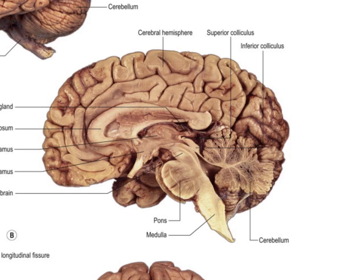Here is the third ventricle, and here is the cerebral aqueduct going down and entering into the fourth ventricle, which is pyramid-shaped or triangular - sitting just underneath the cerebellum. So those are elements of the ventricular system visible in this sagittal section. If this is the thalamus, then this here is the hypothalamus, sitting very close to the pituitary stalk and the optic chiasm. Here is the midbrain, this is the pons, and this is the medulla.